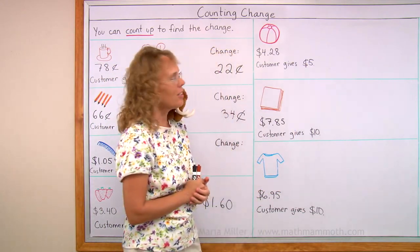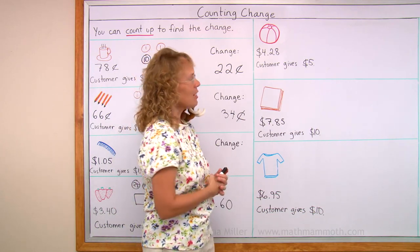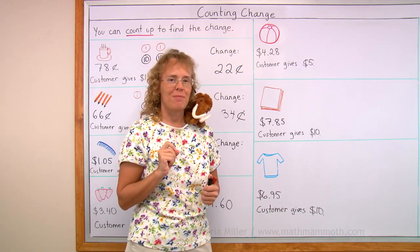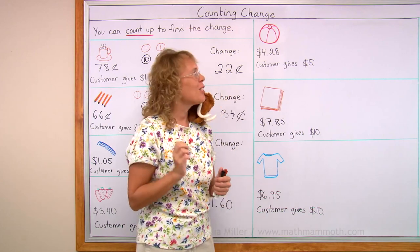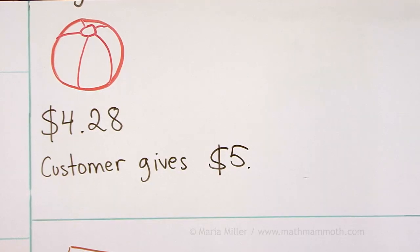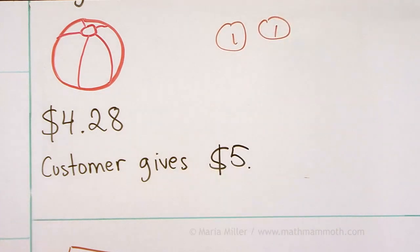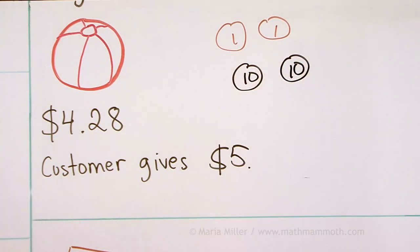Next we have a beach ball, $4.28. The customer gives $5. Now try to work it out yourself. Pause the video, or try to be quicker than I when I work through it. $4.28. First, I will add from $0.28 to $0.30. That means two pennies. Then I will add a dime. And at $0.10, I will be at $0.50, or $4.50.